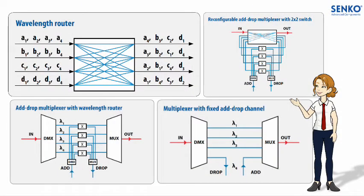Once we understand the functionality of the AWG, we will see how this simple component is able to make many complex optical network functions possible. The AWG is at the heart of many modern optical networks, which enable information flows across the world every day.